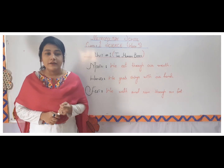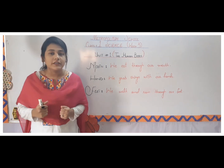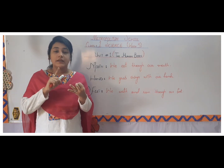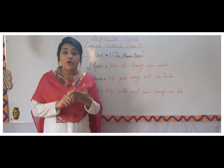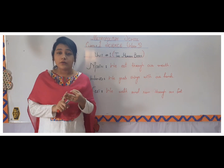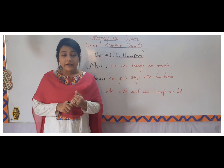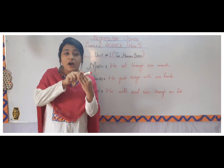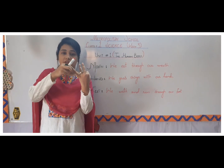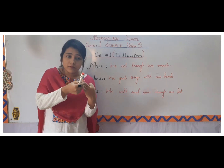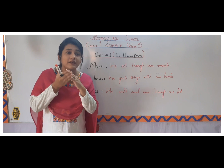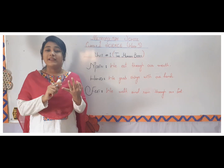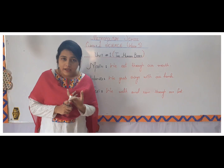Now let's talk about living things. What are living things? Living things are all those things around us who can breathe, eat, grow, and in the end, die. They are categorized into three parts: human beings, plants, and animals. All things in these three categories have the same characteristics — they all eat, breathe, grow, and in the end, they die.